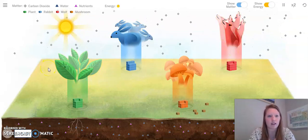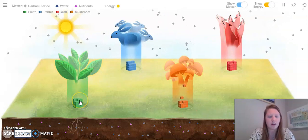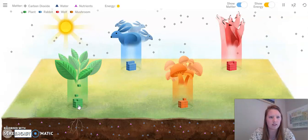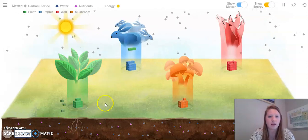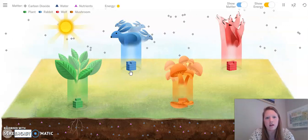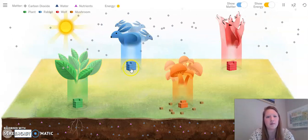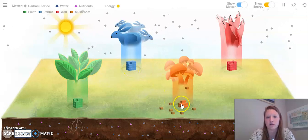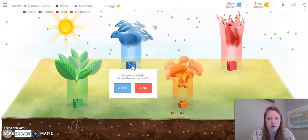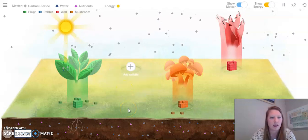As I'm observing, I can see that the sun is giving plants energy. Then those molecules seem to be moving to the rabbits or back into the soil. The rabbits are then getting that energy, and then the rabbits' energy is either going to go to the wolves, or if the rabbit dies, they are going to go to the mushrooms. I wonder what happens if I remove the rabbits from my ecosystem.